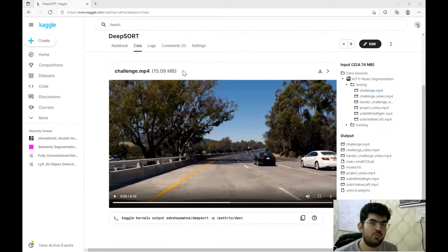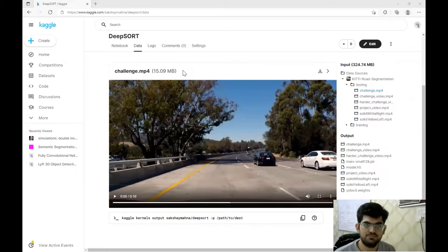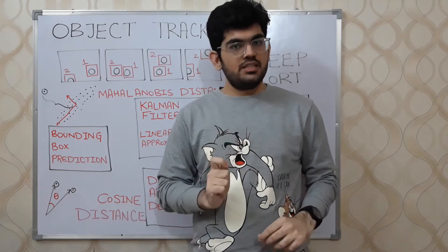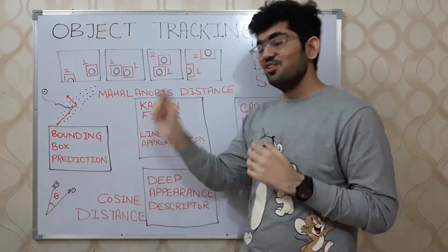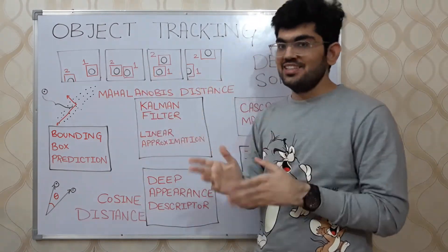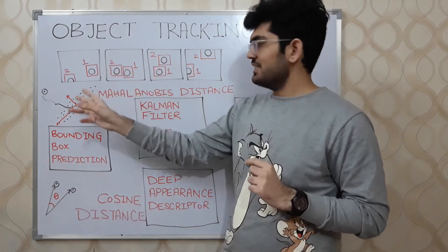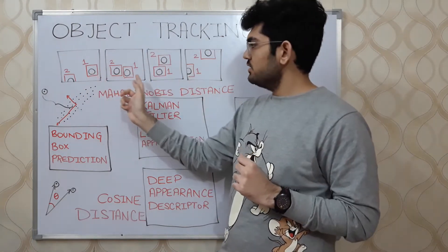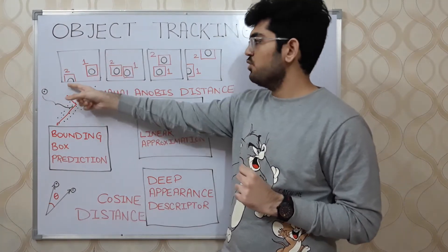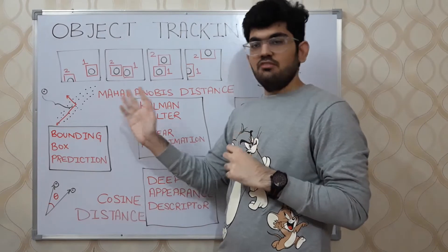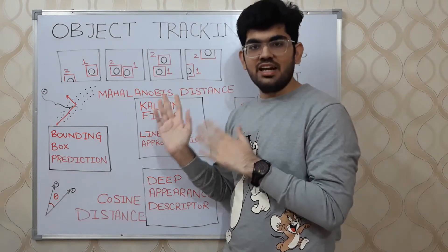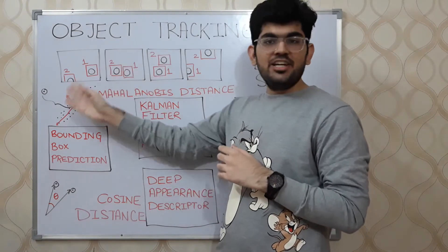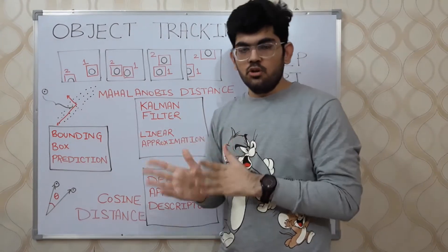Now we have defined the object tracking problem and had a look at the dataset. Let us understand how the deep sort algorithm works. In object tracking, not only do we need to detect the objects, but also track where they are going. If we consider a collection of images — a video — we can see two objects moving: a round object going in the horizontal direction and one going in the vertical direction. We are not only detecting where the objects are present, but also tracking where objects with IDs 1 and 2 are going.